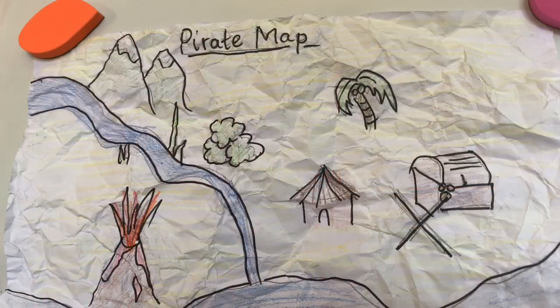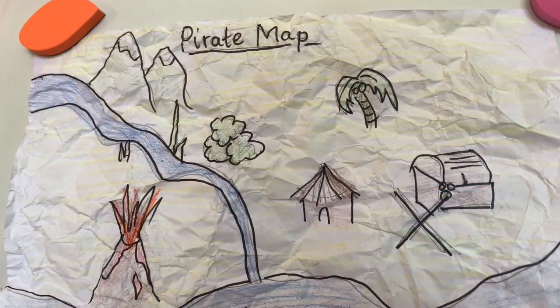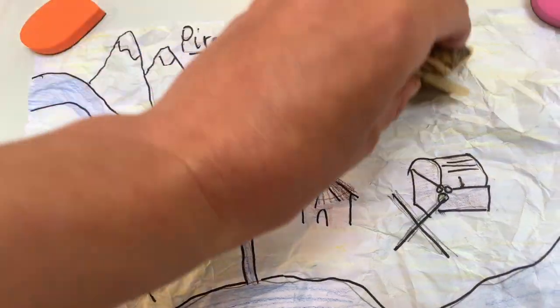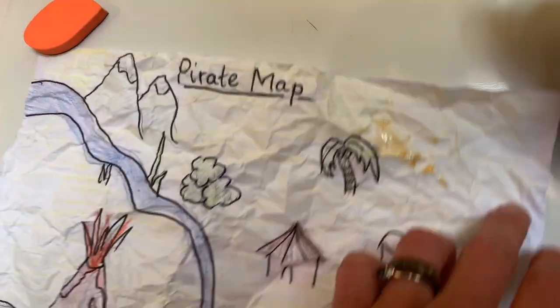We are going to use this tea to make our map look super piratey. Please make sure you allow the tea to cool — don't stick your fingers in a boiling hot cup of water! When your tea has got nice and cool, you can just take the soggy tea bag out — whoopsie daisy.